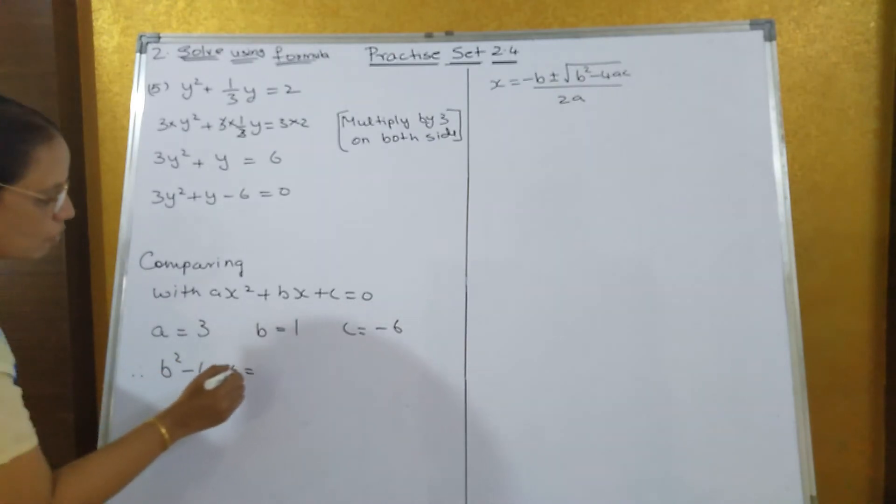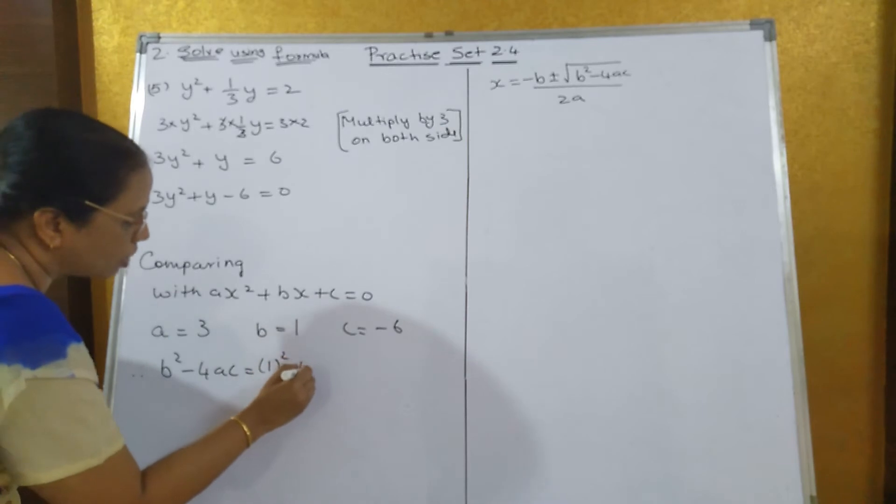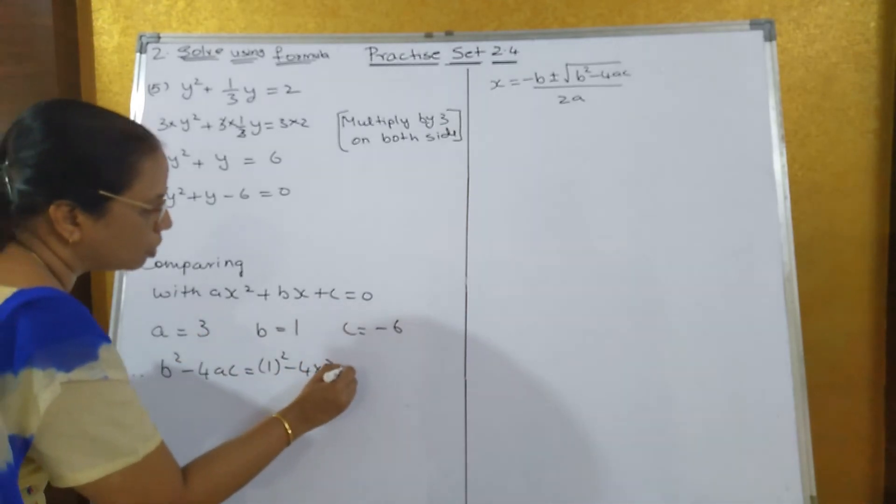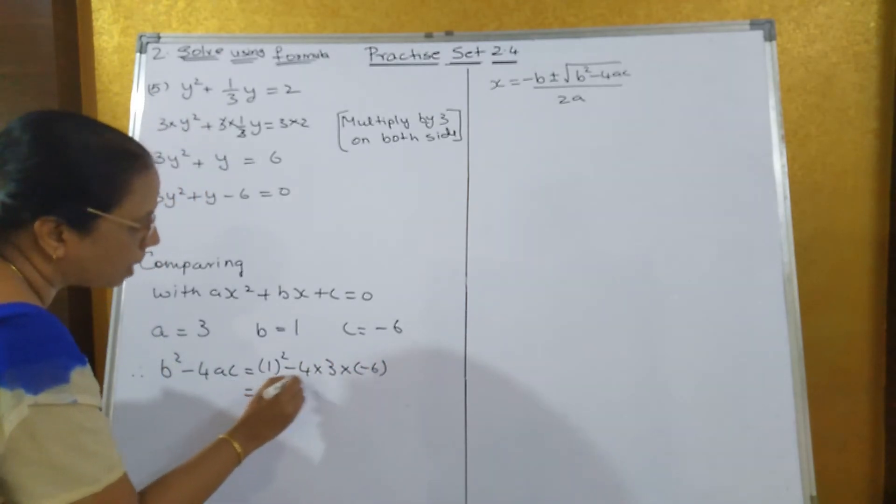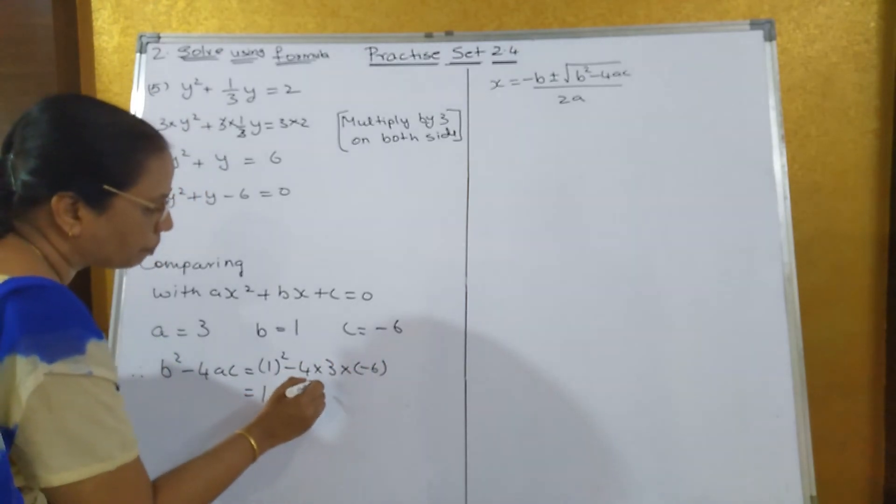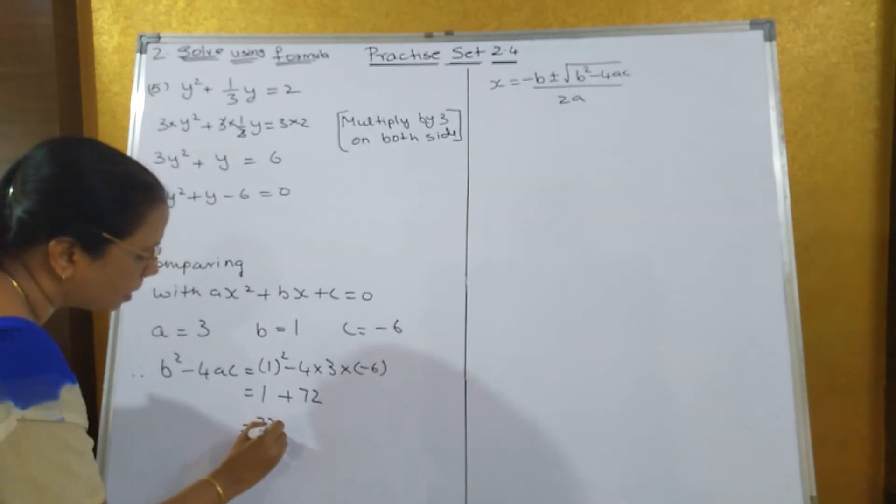Therefore, b² - 4ac is what? b is 1, so 1² - 4 × a is 3 × c is -6. That's equal to 1 minus into minus plus 4, 3s are 12, 12, 6 are 72. That's equal to 73.